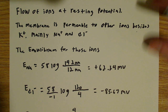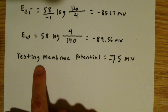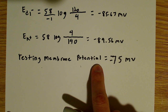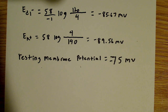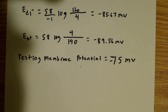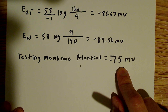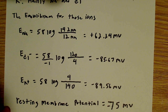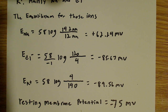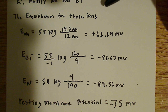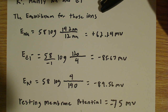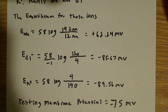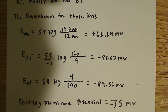So you calculate the equilibrium potential for these ions. I'm arbitrarily assigning a resting membrane potential of negative 75 millivolts — that's about average. To find out which way these ions are flowing, I want to calculate the equilibrium potential for each one.